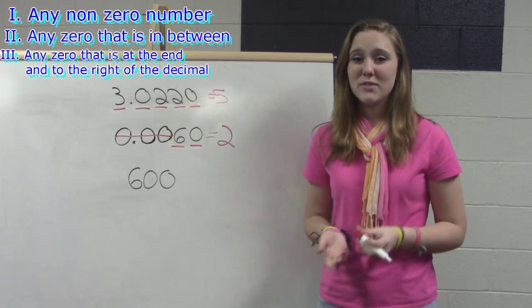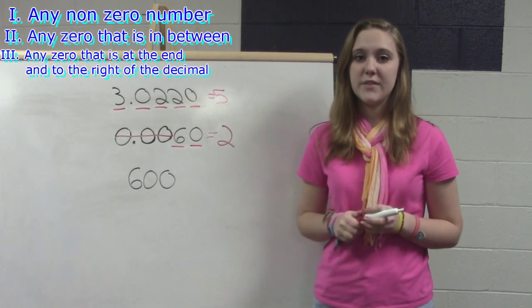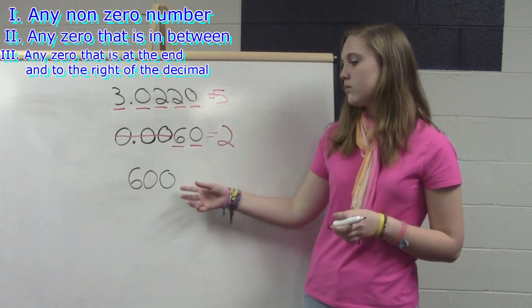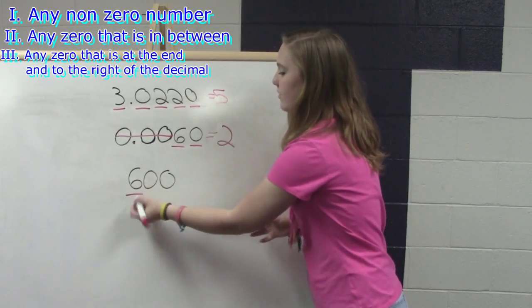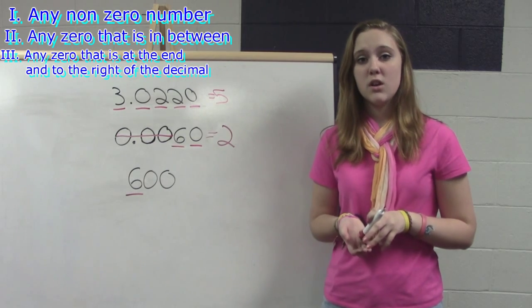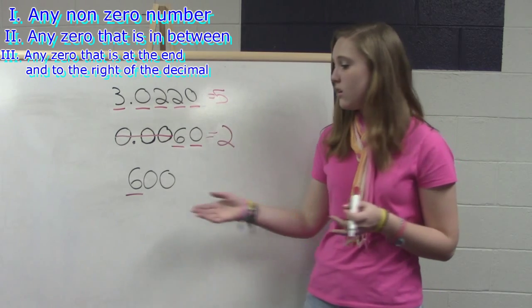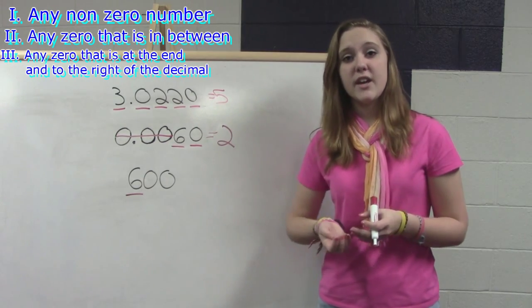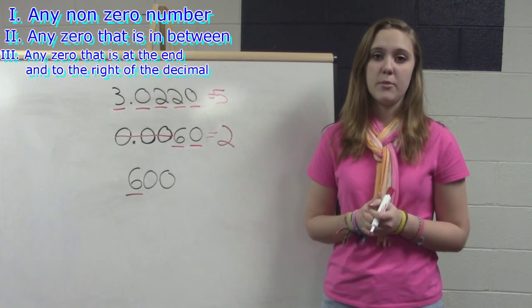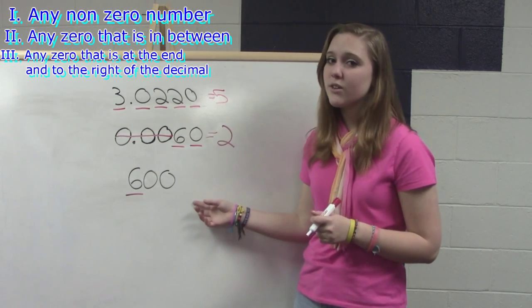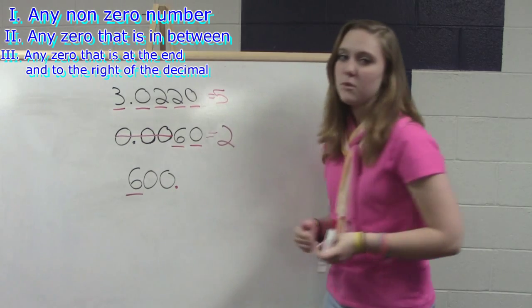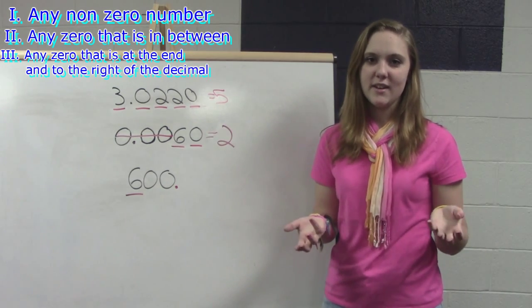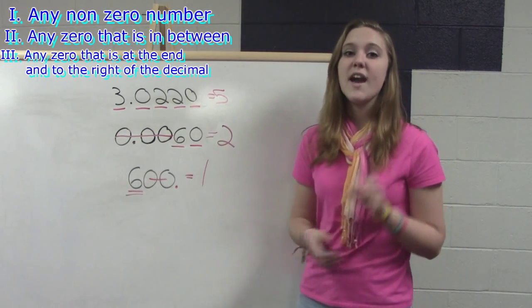Now our last number — even though it may look really easy, numbers like this are the hardest to figure out. Rule one: we have a six, which is a non-zero digit. Rule two: we have two zeros, but neither of them are in between another sig fig, so neither is significant. Rule three: we do have a zero at the end of the number, but there is an imaginary decimal point there, and this zero is to the left of the decimal point, so we can't count it as significant. In this last number, we only have one significant figure.